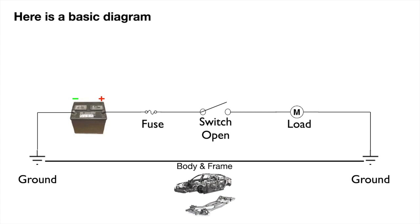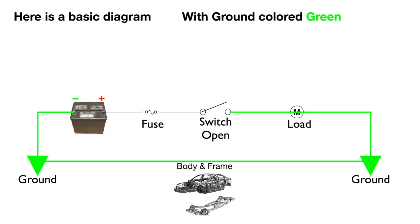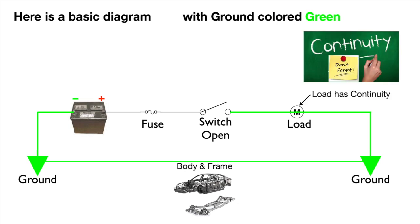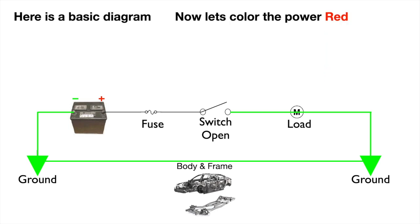Here is a typical basic diagram with a fuse, an open switch, and a load. We've colored the ground path green. Now don't forget about continuity — good loads have continuity. If you haven't done so already, you may want to watch my video on continuity, where we learned that continuity means whatever comes to it passes right through it. So since ground comes to the load, the ground will pass right through it. Now let's color the power side red. The power will stop at an open.